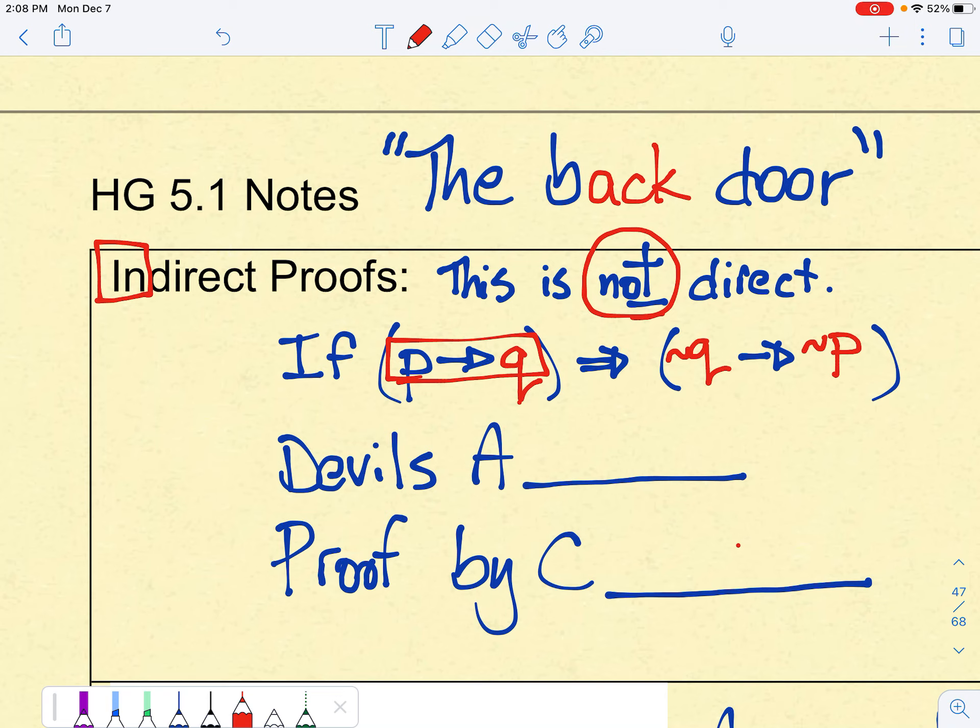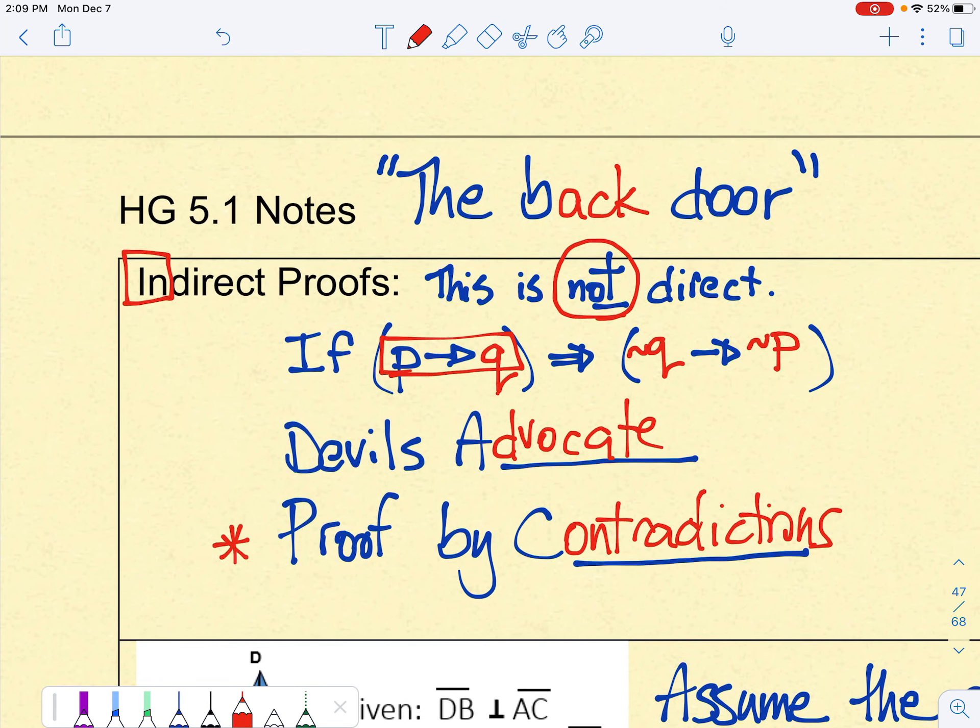Some people call this the devil's advocate proof. Others say it's a proof by contradiction. I like this last one. I think it's well-renowned in terms of how you refer to these types of proofs.